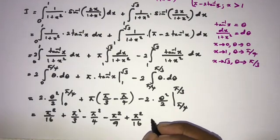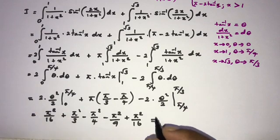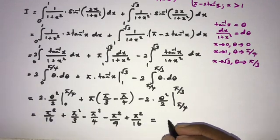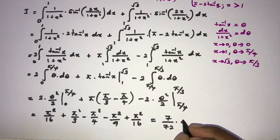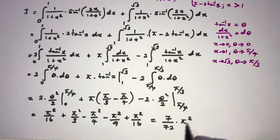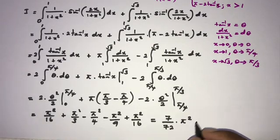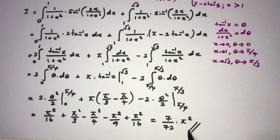Simplifying everything together, we get 7 over 72 times pi squared. So the final answer is 7pi squared over 72. If you like this video, please subscribe to the channel. Thank you for watching.